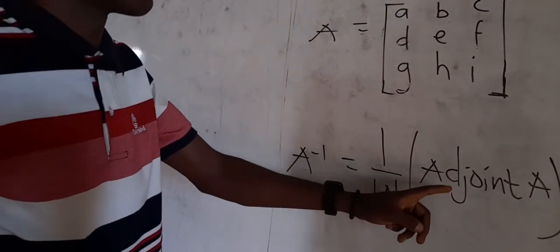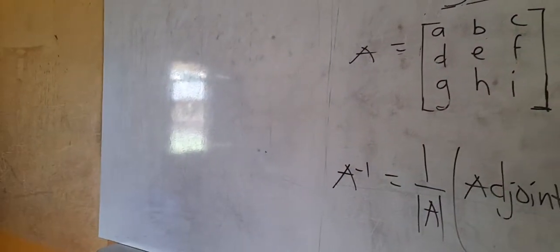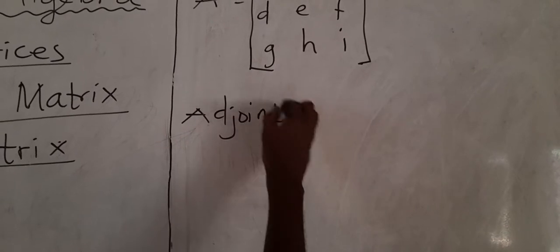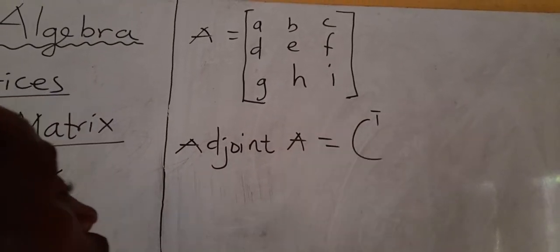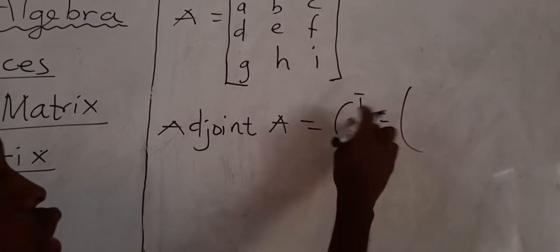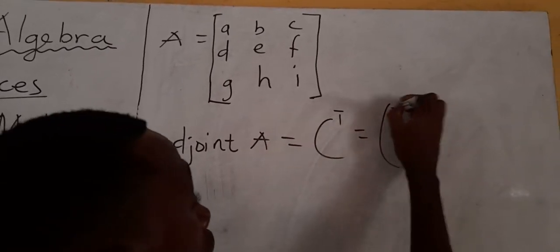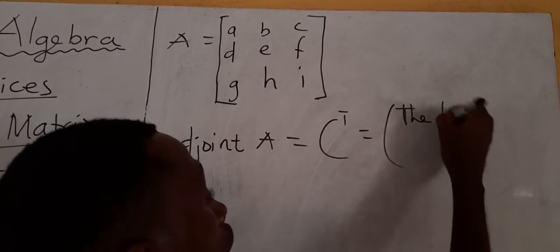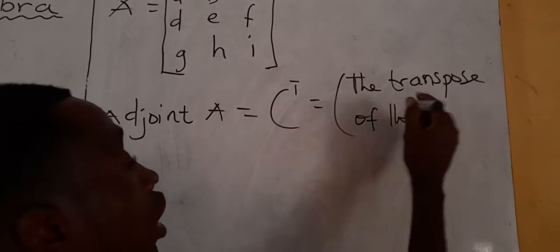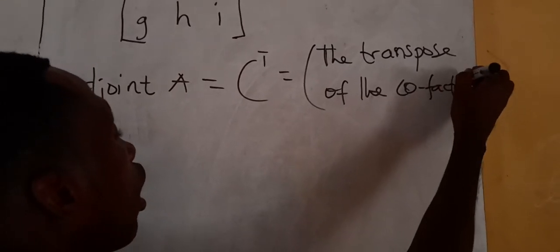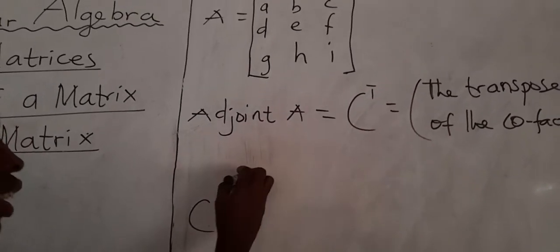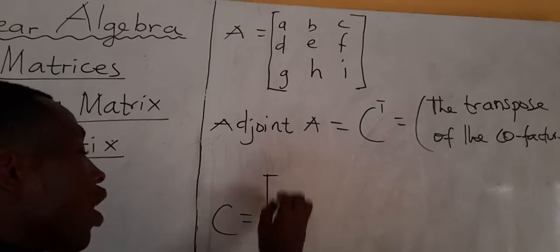Now what is the adjoint for a 3×3 matrix? The adjoint of A is given as C to the exponent T, which simply means the transpose of the cofactors. C stands for cofactors, so C^T means the transpose of the cofactors. The cofactor matrix C is a very big matrix.